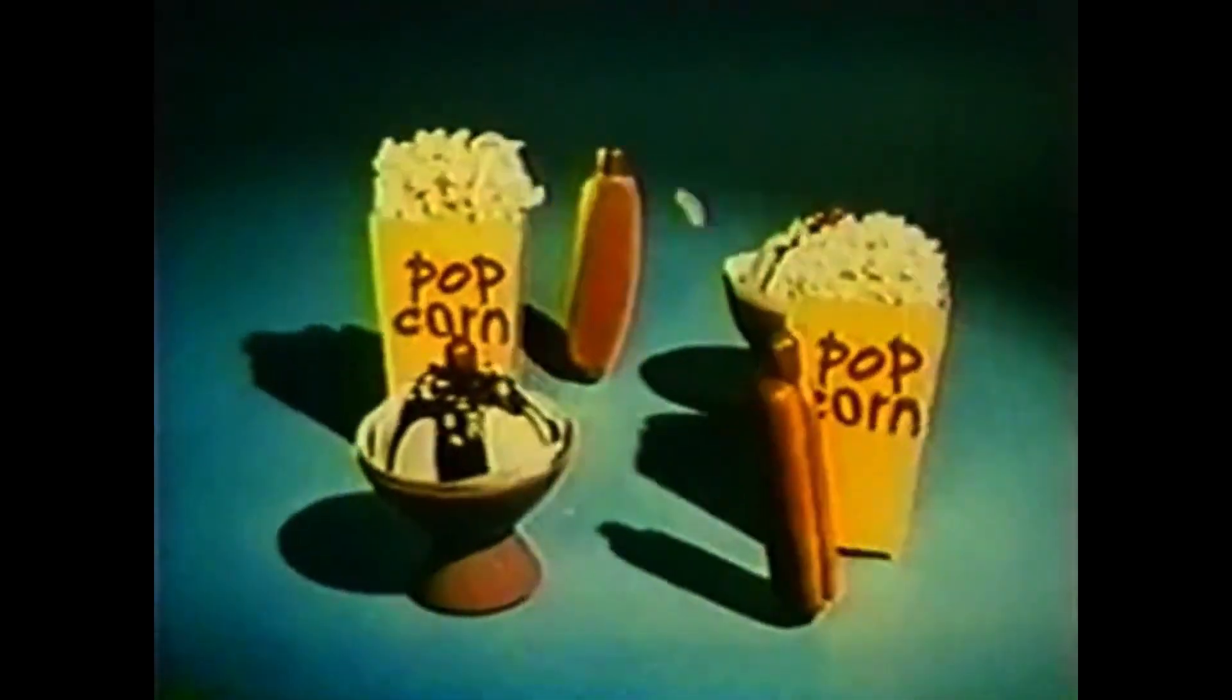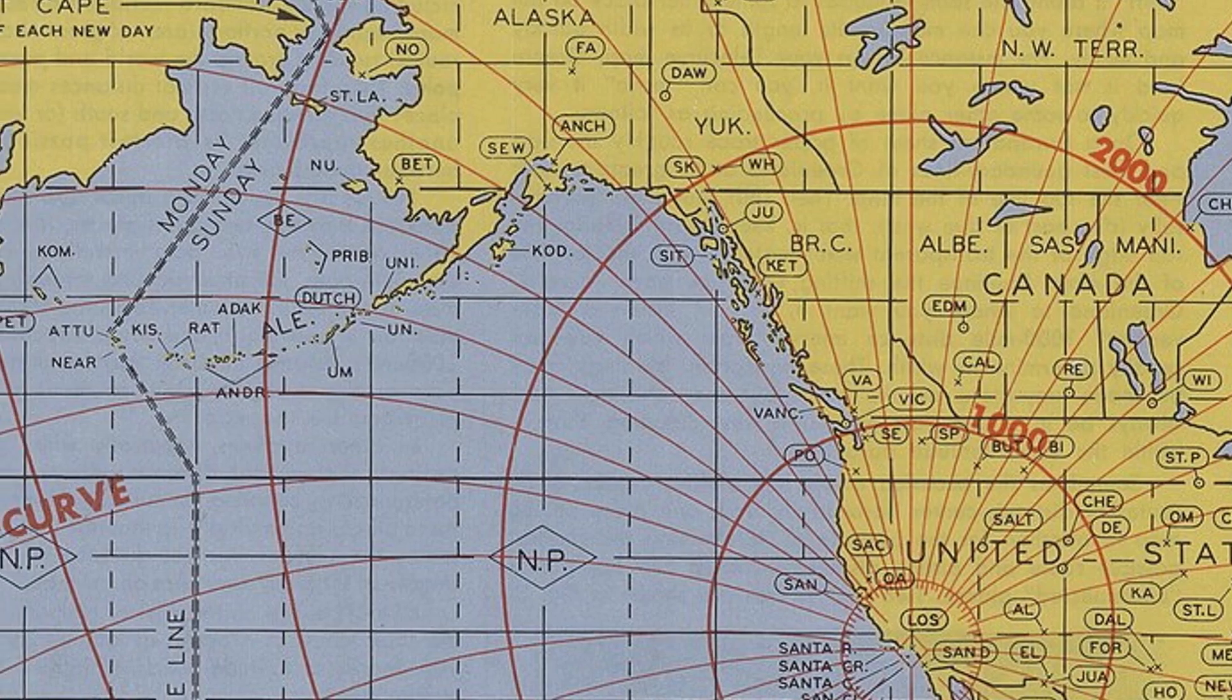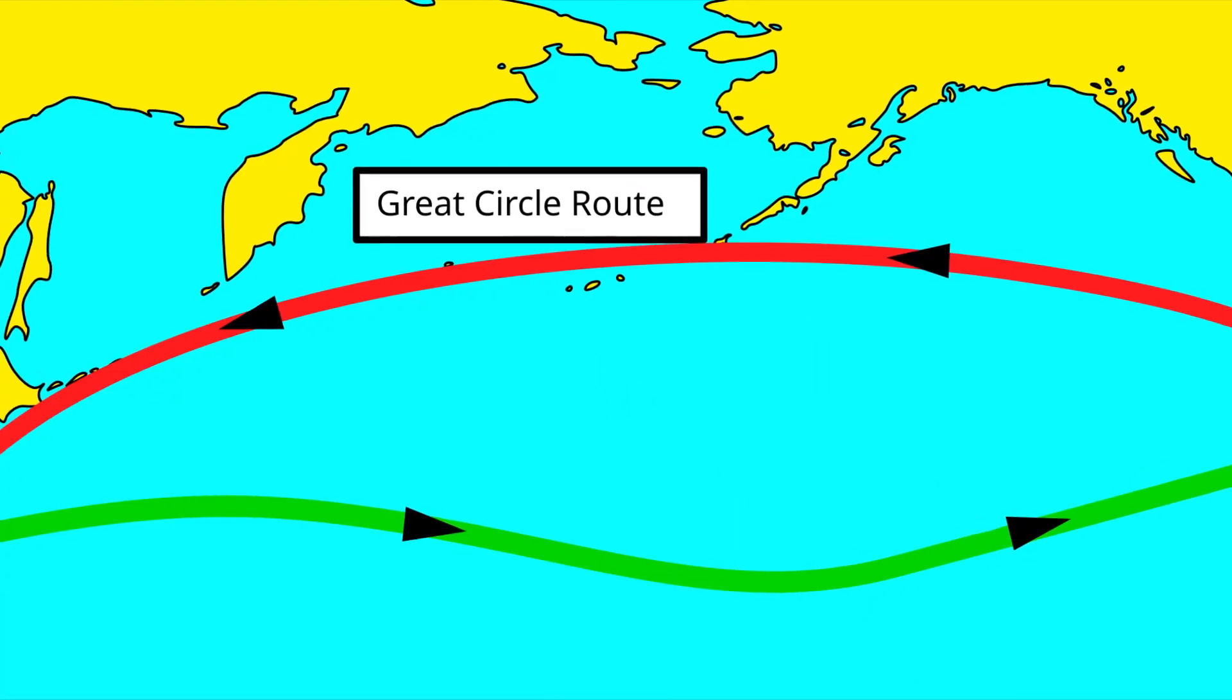And now to the part you all have been waiting for. Take out any world map with flight routes. Notice how long distance paths appear curved. Here's the truth: those aren't really curves. They're actually the straightest possible paths on our spherical Earth, what mathematicians call great circles.